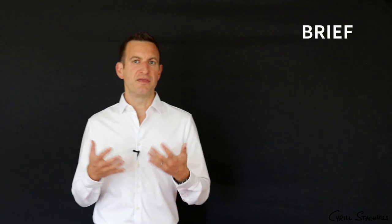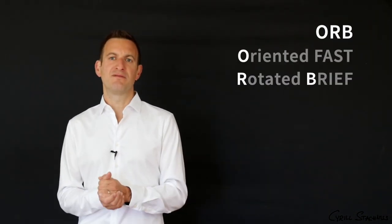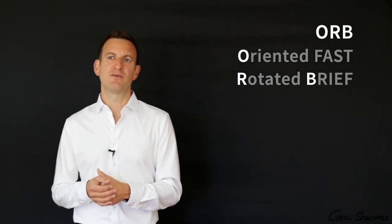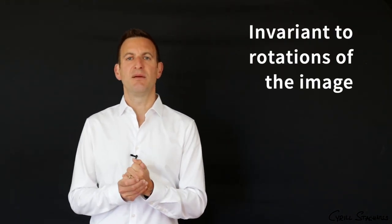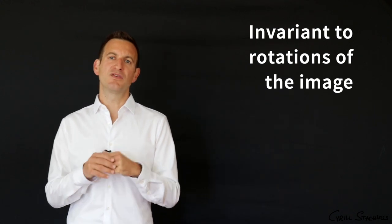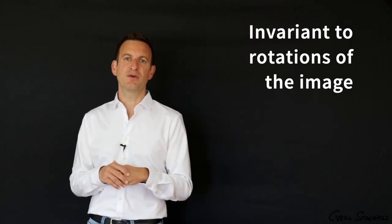So what I explained to you so far was basically the BRIEF descriptor. There are other variants such as ORB or Brisk. ORB, for example, is a very popular extension of BRIEF, which combines fast key points with an optimized version of the BRIEF descriptor that is rotation invariant. So if you rotate your image, ORB will give you still roughly the same descriptor or the same signature, where BRIEF will not.